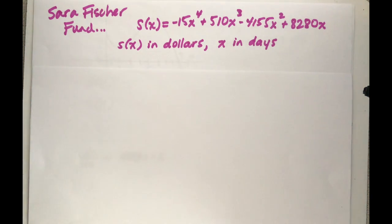Back to Sara Fischer fund. I've got a Sarah Fisher fund here. S(x) is in dollars, x is in days, and the function itself is s(x) = -15x^4 + 510x^3 - 4155x^2 + 8280.